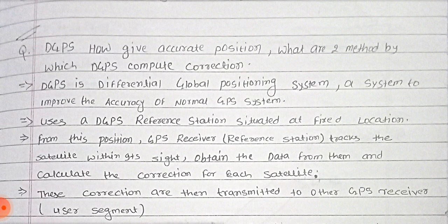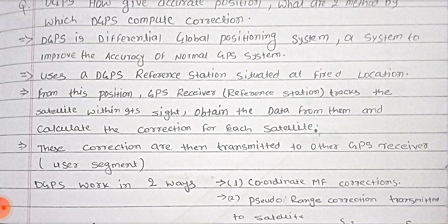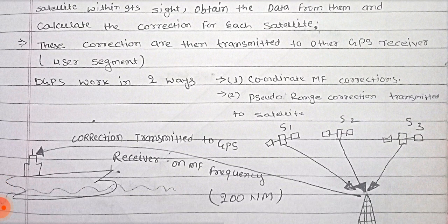The reference station calculates the correction for each satellite. Since the location of this DGPS reference station is already known to the reference station, when it calculates the data from the satellite, it can easily identify the error of the satellite. These corrections are then transmitted to other GPS receivers, that is the user segment.